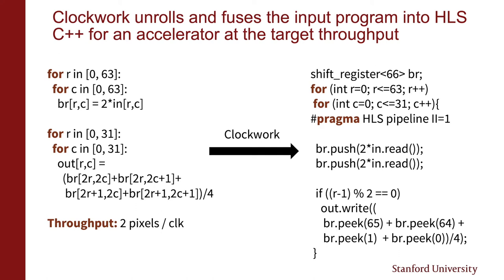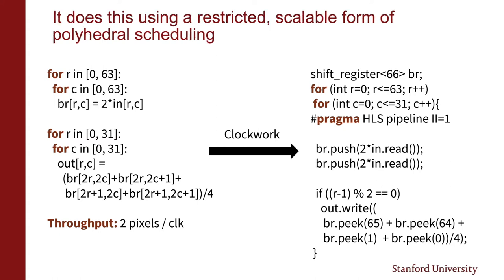Clockwork is the first compiler of its kind that can statically schedule large, realistic, multi-rate image processing algorithms. It unrolls and fuses an input program into HLS C++ for an accelerator at the target throughput. The user passes in a program together with a throughput target — for example, an accelerator consuming two pixels of input every clock cycle. Clockwork then unrolls all loop nests necessary to reach the target throughput, optimizes internal reuse buffers into shift registers or line buffers, converts inputs and outputs into streams, and fuses the entire application into a single loop nest pipelined to an initiation interval of one, using a restricted scalable form of polyhedral scheduling.